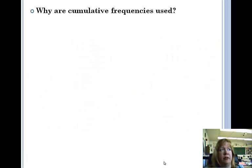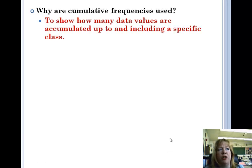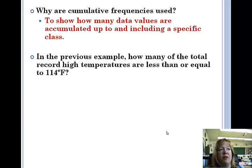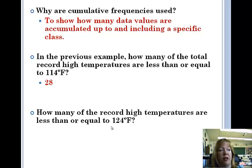So now you've got the cumulative frequency. So there it is. Why are they used? To show how many data values are accumulated up to and including a specific class. It also shows you does most of the data fall early on or later on? It also shows you the distribution of your data. In the previous example, how many of the total record high temperatures are less than or equal to 114? If you look at the cumulative data, it's very easy. You look there, it's 28, because at that time, 28 had accumulated if you look at your chart. And how many record high temperatures are less than or equal to 124? That's 48. So there you have most of the states don't get above 124.